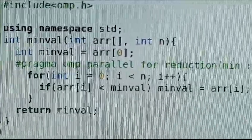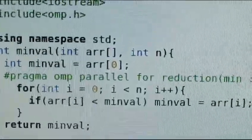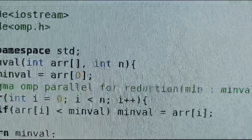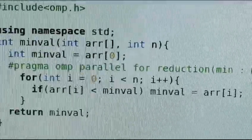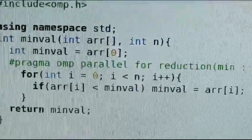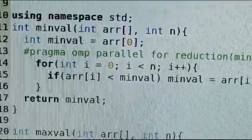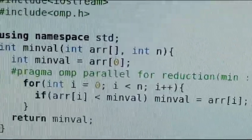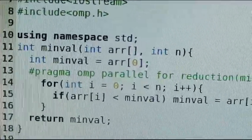This for loop has the condition if arr[i] is less than minval, then minval equals arr[i]. So it updates minval to be the current element. After that it will return the minval.